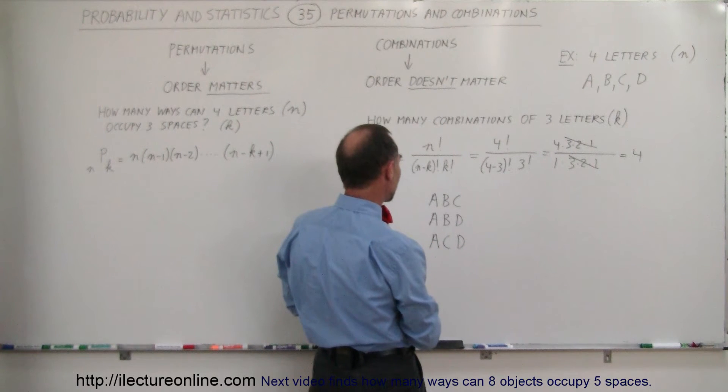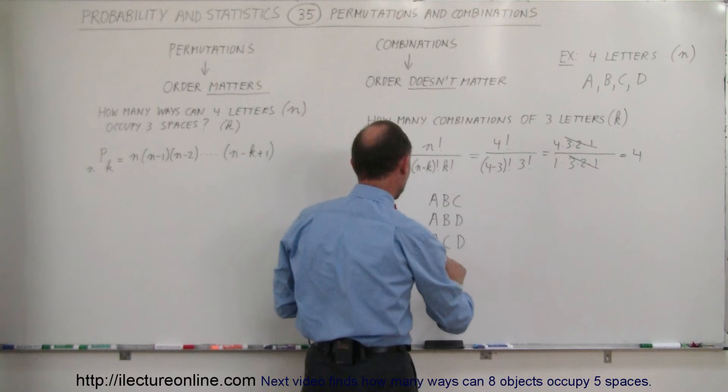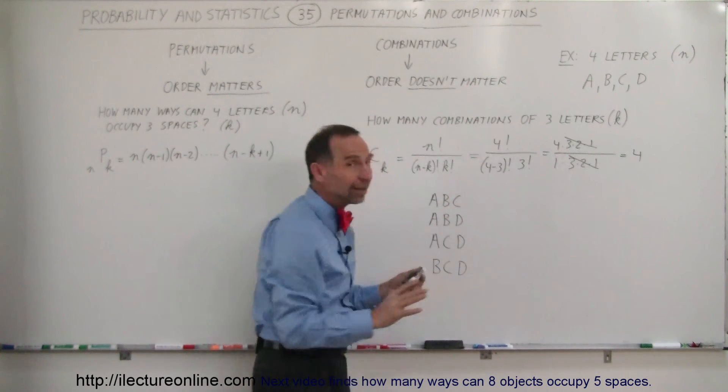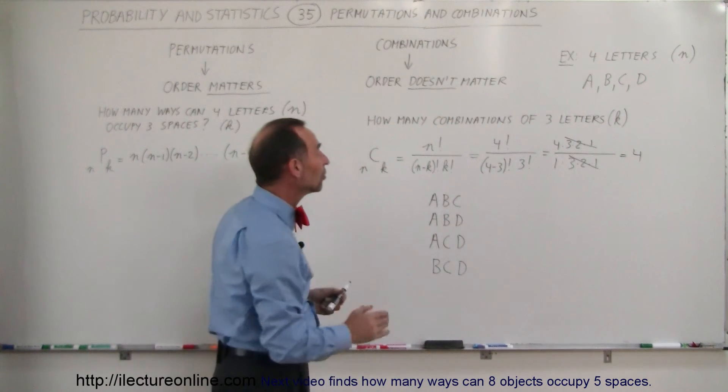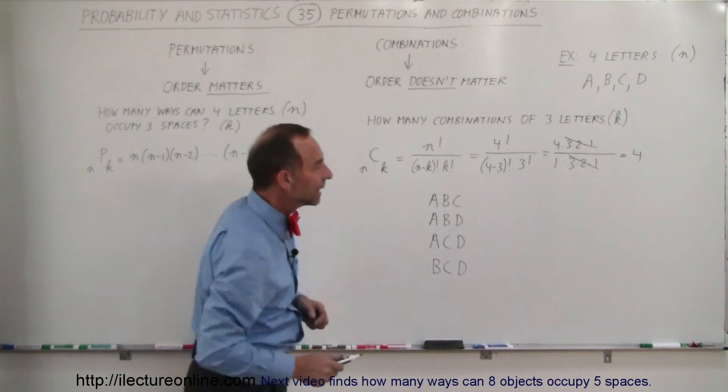Or we can make, let's see, what else don't we have yet? We can make B, C, and D. And, of course, we can interchange those. We can put B, A, C, C, A, B, all that, but that's still the same combination, so there's only four different combinations, just like our formula indicated.